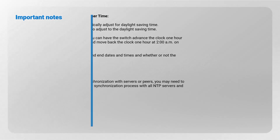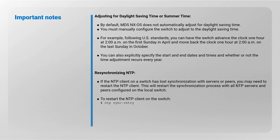Important notes: by default, MDS NX-OS does not automatically adjust for daylight saving time — you must manually configure the switch to adjust. For example, following US standards, you can have the switch advance the clock one hour at 2 AM on the first Sunday in April and move it back one hour at 2 AM on the last Sunday in October. You can also explicitly specify start and end dates and whether the adjustment recurs every year. If the NTP client has lost synchronization, restart it using the command 'ntp sync retry', which restarts synchronization with all configured NTP servers and peers.